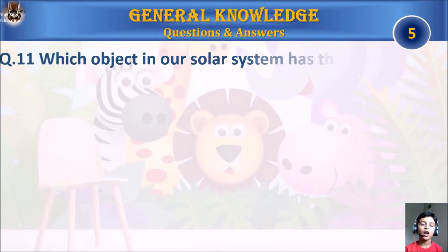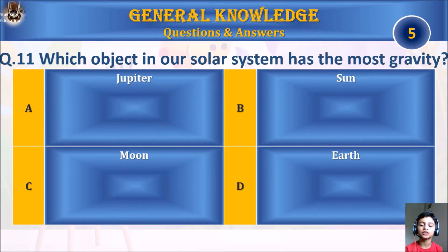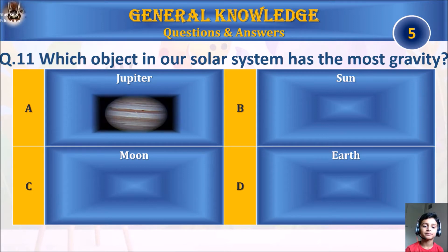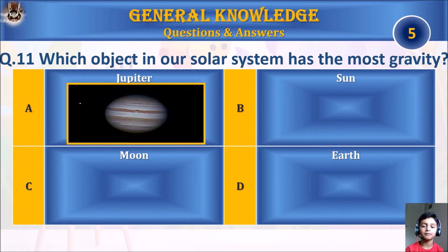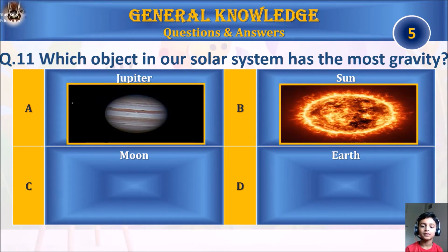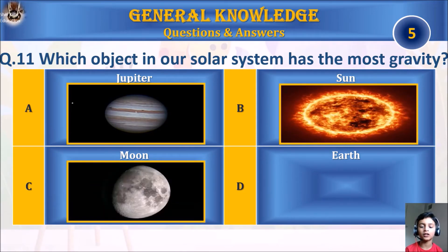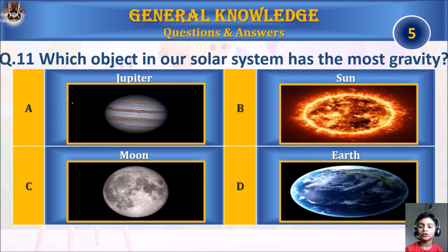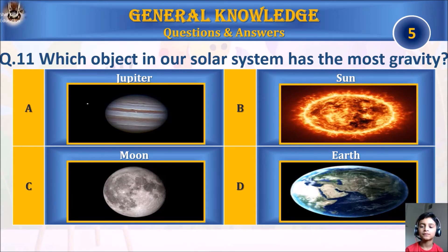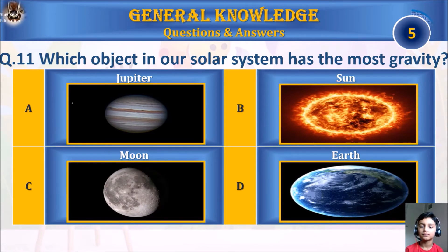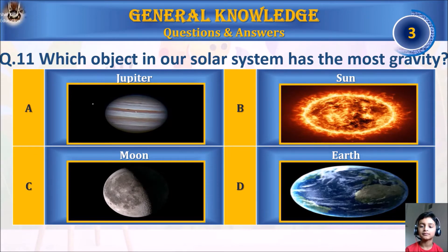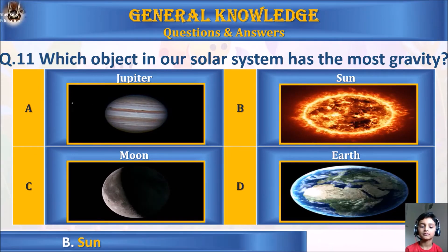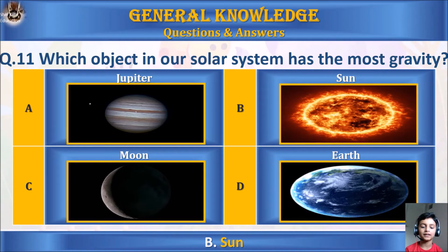Question 11: Which object in our solar system has the most gravity? A. Jupiter, B. Sun, C. Moon, or D. Earth. Your time starts. The answer is B. The Sun.